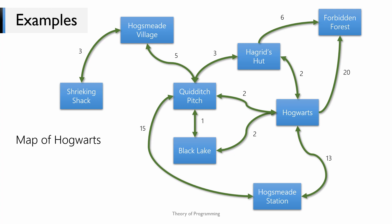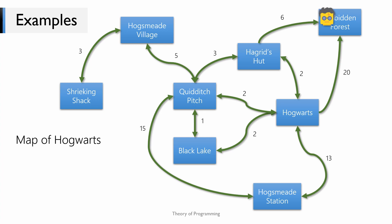While we are here talking about the Hogwarts example, I'd like to bring your attention to the nature of arrows. Usually when we have a graph of places, the edges are bi-directional in nature. For example, the edge between Hogwarts and Hagrid's Hut is bi-directional, which means you can go from Hogwarts to Hagrid's Hut and come back via the same path. Either way, the cost for a one-sided trip would be 2.